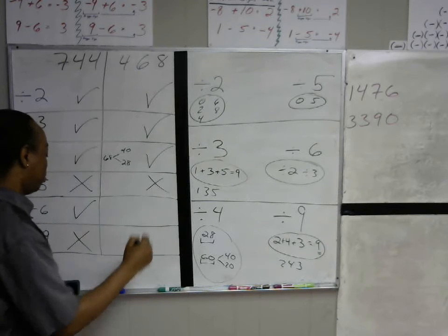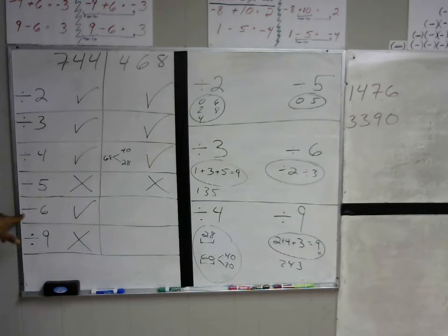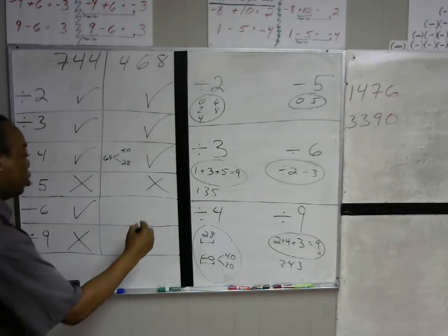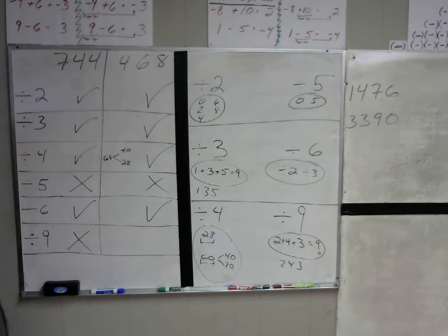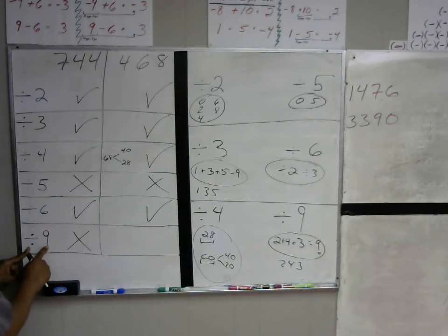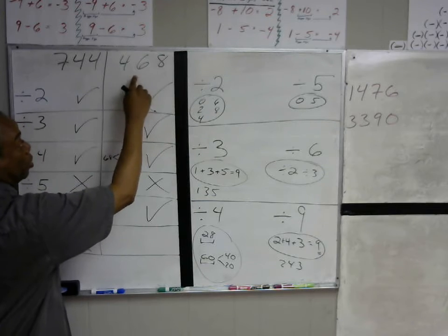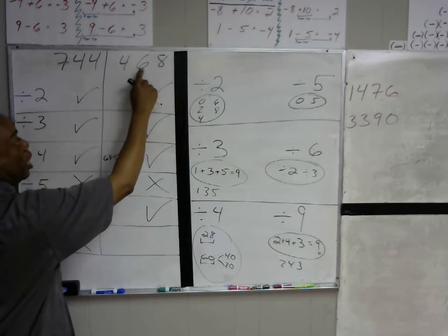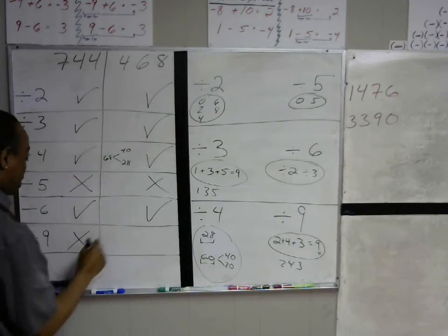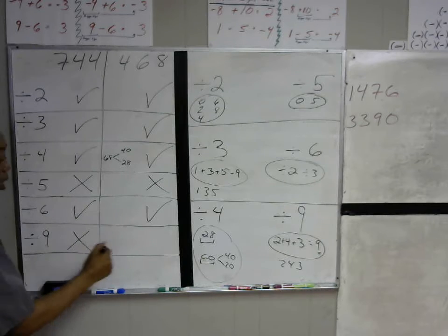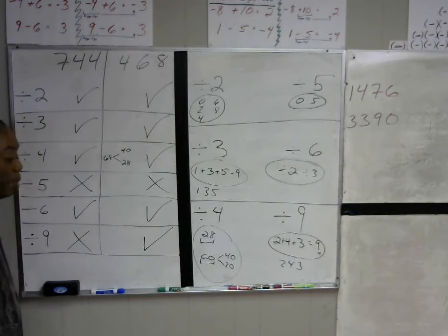To be in the six times tables, it has to be in the two and the three times tables, which it is, so it can be divided by six. For nine, the digits have to add up to a number in the nine times tables: 4 plus 6 is 10, and 10 plus 8 is 18. 18 is in the nine times tables, so 468 can be divided by nine.